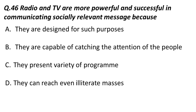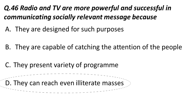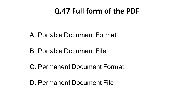Question 46: Radio and TV are more powerful and successful in communicating socially relevant messages because — they can reach even illiterate masses. Unlike newspapers, which only literate persons can read, TV and radio can target even illiterate people. The correct answer is D: they can reach even illiterate masses.